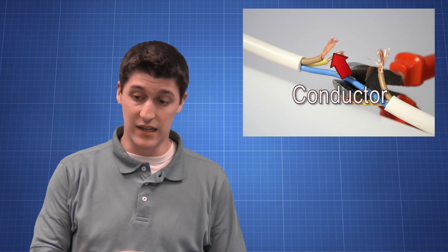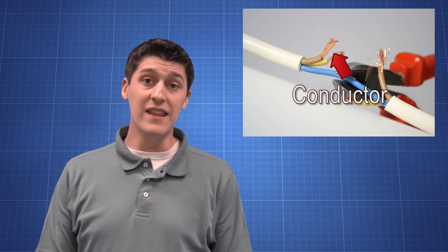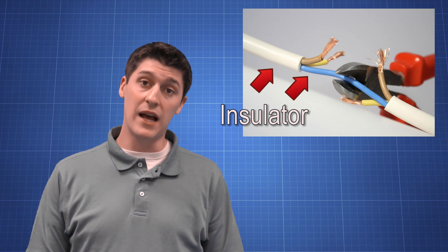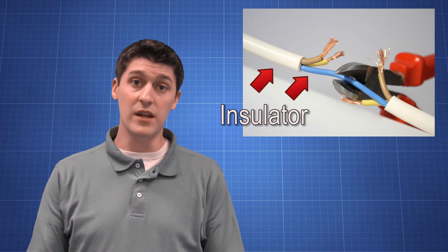That's why when we are looking at wires, we'll notice that the inside part is metal, which allows the electricity to move through it, and the outside part is either rubber or plastic to protect you from the electricity.